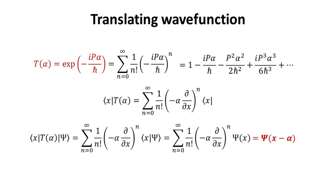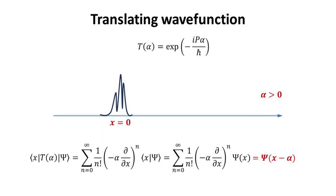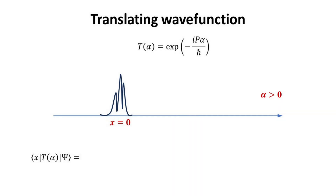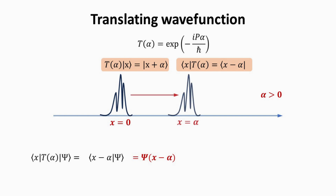Thus, the translation operator T is defined to translate the wave function by an amount minus α. If the original wave function ψ(x) is a Gaussian-like packet located at x = 0, then the new translated wave function ψ(x − α) will be the same Gaussian-like packet but now localized at x = α. Alternatively, we can perform the translation operation on the bra ⟨x| instead of |ψ⟩. Recall that T translates |x⟩ to |x + α⟩, but when acted on ⟨x| it translates to ⟨x − α|. This trick allows us to conveniently perform translation operations in abstract bra-ket notation without dealing with wave equations.